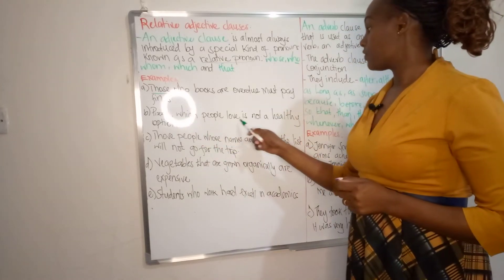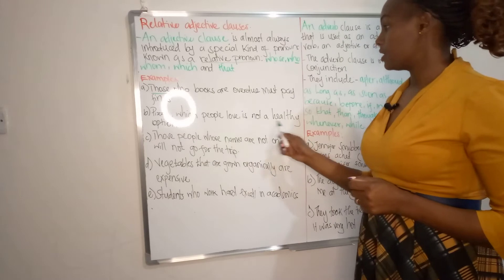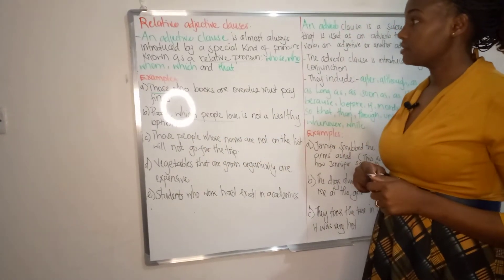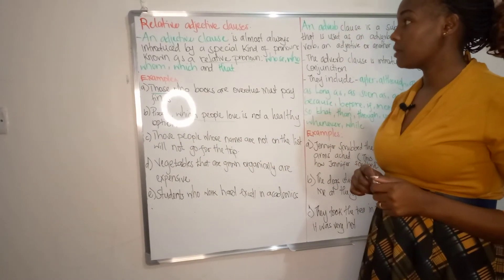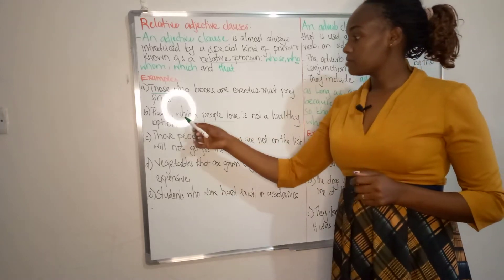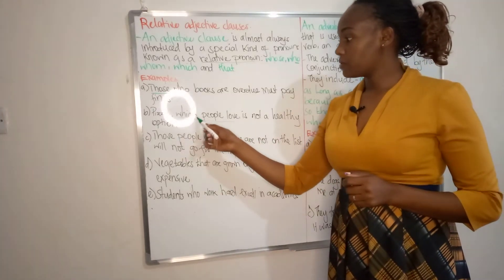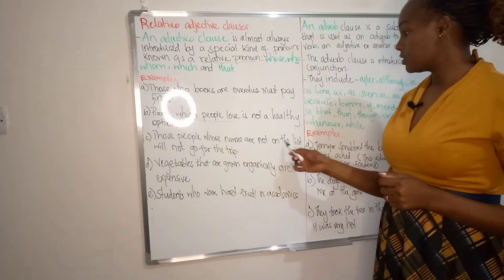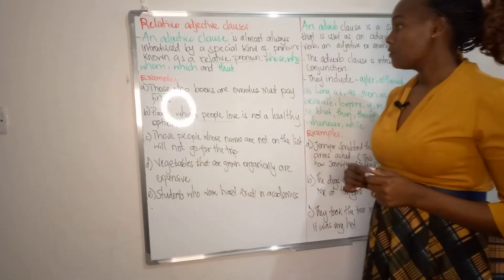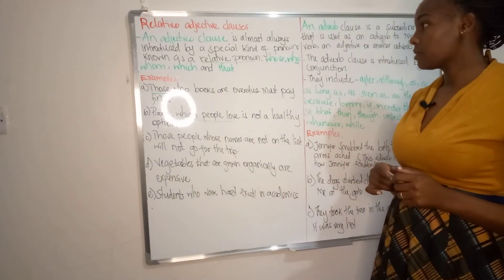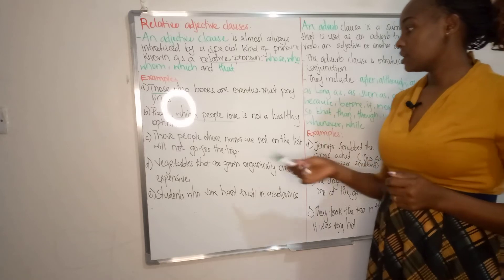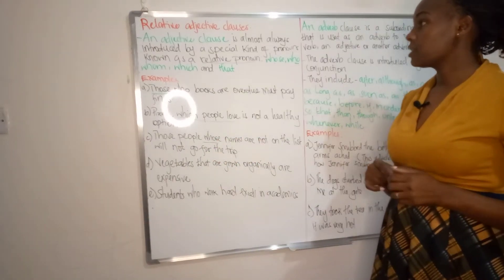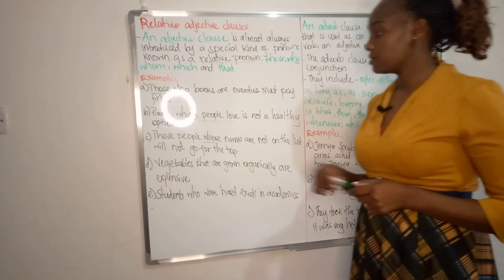'Pinsa, which people love, is not a healthy option.' 'Which people love' is our adjective clause because it has been introduced by 'which'. 'Those people whose names are not on the list will not go for the trip.' Here, 'whose' is showing that this is an adjective clause.